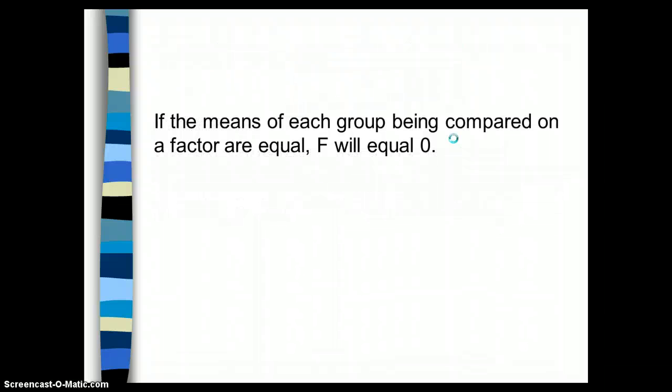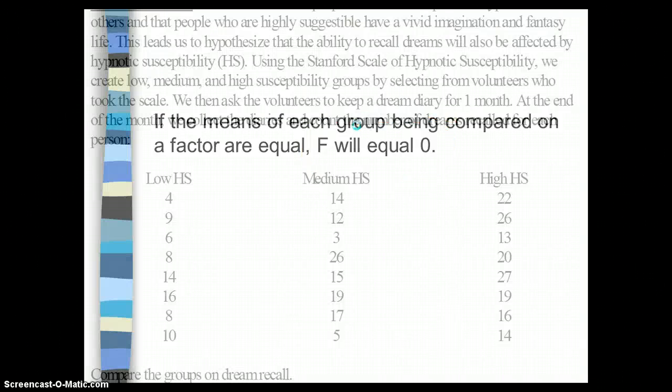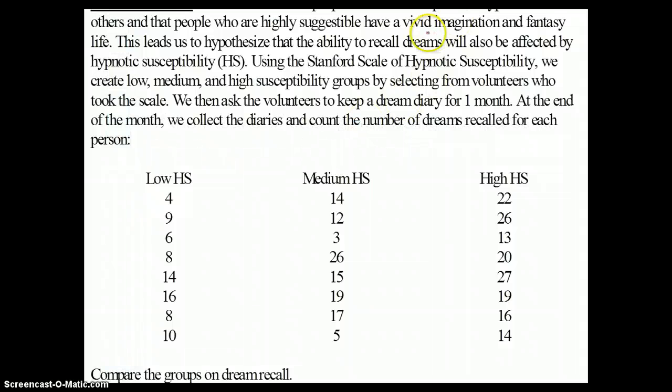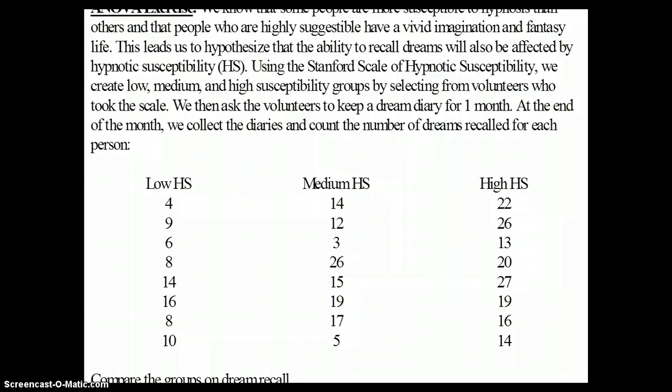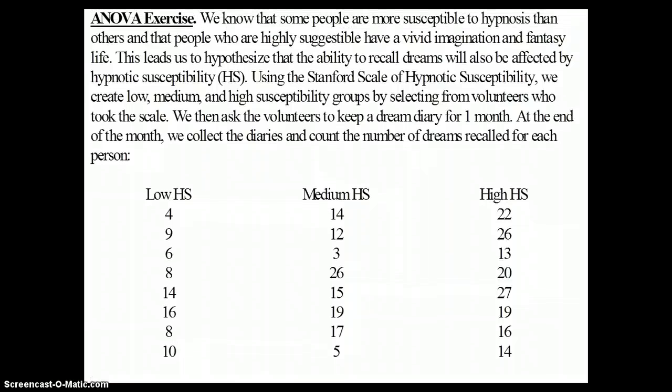If the means of each group being compared on a factor are equal, then F will equal zero — there is no significant difference. For example, some people are more susceptible to hypnosis than others, and people who are highly suggestible have a vivid imagination and fantasy life. This can lead us to hypothesize that the ability to recall dreams will also be affected by hypnotic susceptibility. I'll use this example to show you how to use SPSS to calculate ANOVA in the next screencast. See you next time.